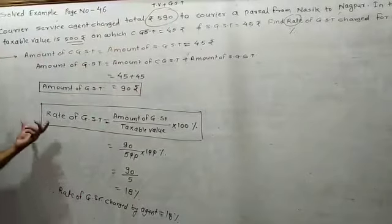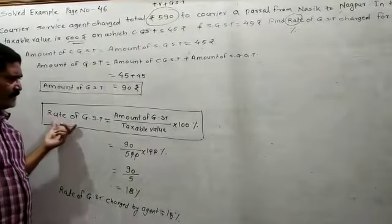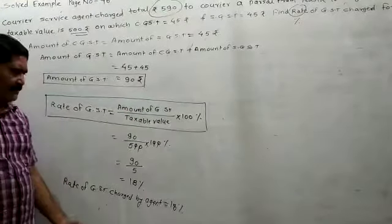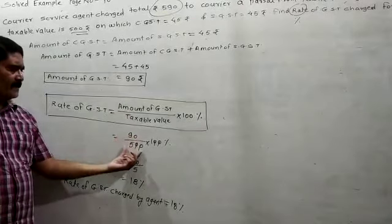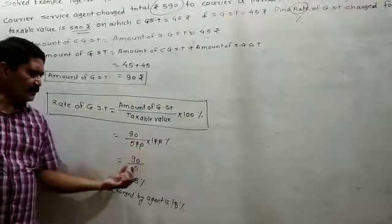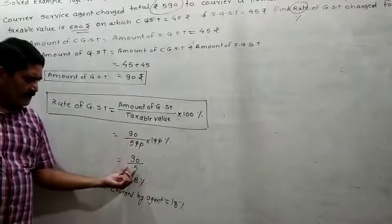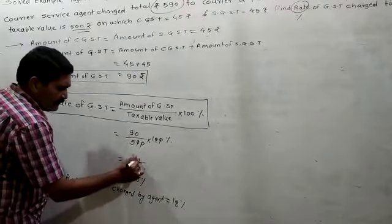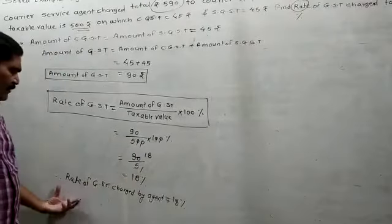Now you have to find the rate of GST. The formula is: Rate of GST = (Amount of GST / Taxable Value) × 100%. So, rate of GST = (90 / 500) × 100%. Cancelling zeros: 90 upon 5, which gives 18. Therefore, the rate of GST charged by the agent is 18%.